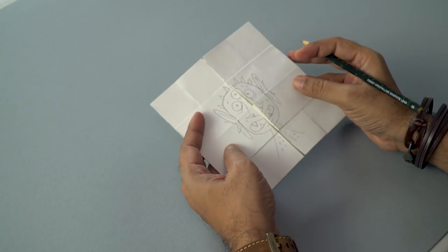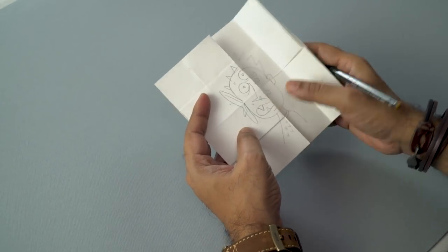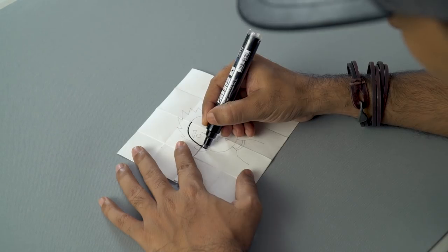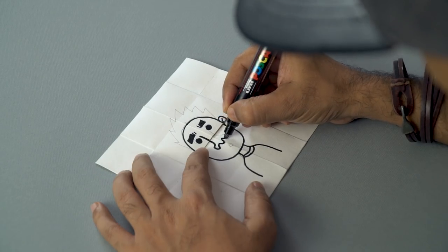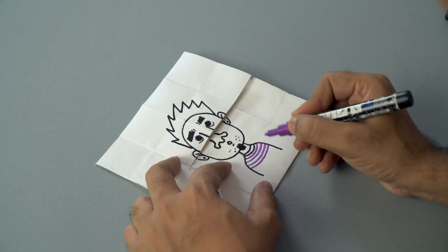Okay, so we are done with all the characters as you can see. So now we will use a marker and we will outline all the pencil lines and color it and see how a never-ending card looks.